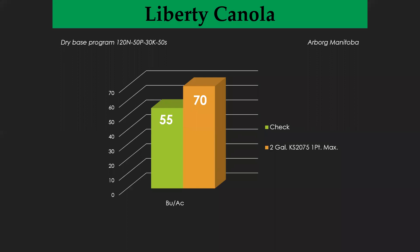Here's a trial done in Arborg, Manitoba on Liberty Canola. The field had the same base fertility program: 120 pounds of N, 50 pounds of P2O5, 30 pounds of potassium and 50 pounds of sulfur. The check ran 55 bushels an acre, and where KS 2075 was applied at 2 gallons an acre, the yield increase was 15 bushels an acre to 70. Just to note that the 2075 also had some micronutrients added to it.